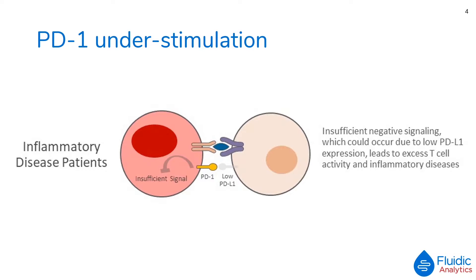If PD-1 is insufficiently stimulated — potentially due to binding too little PD-L1 — the suppressive control of the immune system is lifted. This leads to excess T cell activity which in turn causes autoimmune diseases when the immune system attacks the person's own cells. Thus PD-1 acts as an immune checkpoint and guards against autoimmunity through two mechanisms: first it promotes apoptosis of antigen-specific T cells in lymph nodes, and secondly it reduces apoptosis in regulatory T cells.